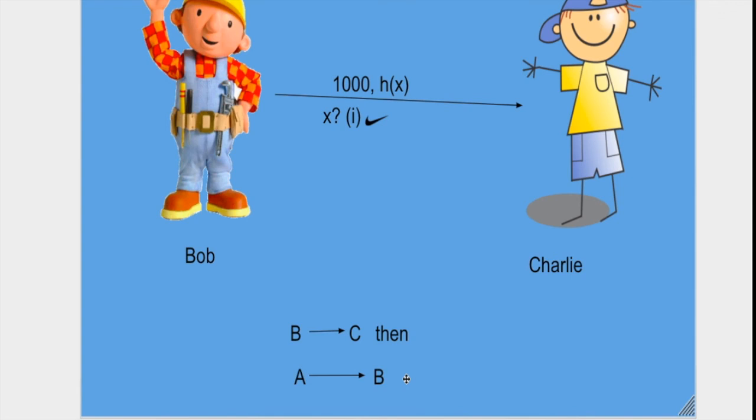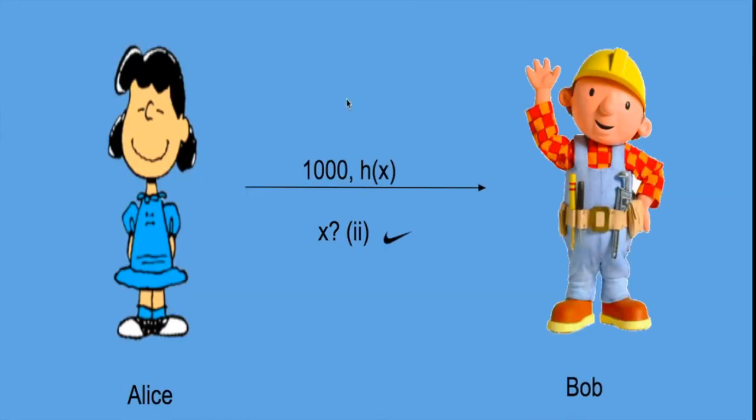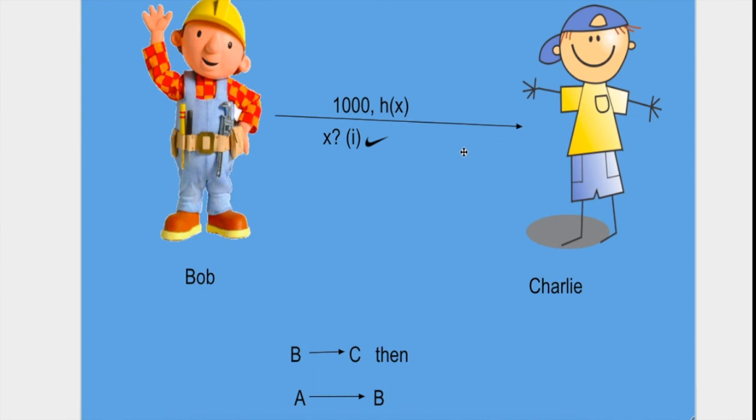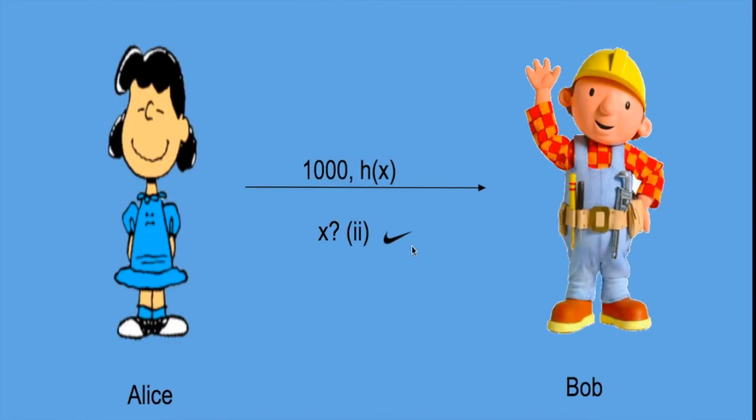There are time locks in the contract. There is a certain time till which Bob has to provide X, and there would be a certain time till which Charlie has to provide X. If nothing happens, if Charlie doesn't provide X or Bob doesn't provide X for a certain amount of time, then the whole transaction would fail and no transaction would occur and no one would lose their funds.